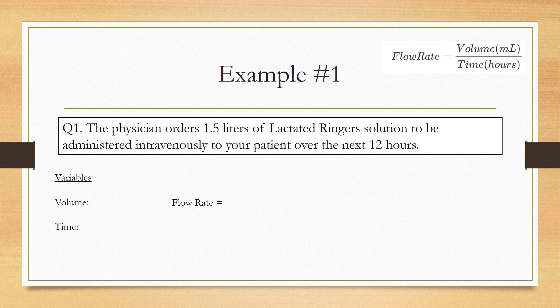Let's go through a quick example. The physician orders 1.5 liters of lactate ringer solution to be administered intravenously to your patient over the next 12 hours. First, let's look at this question. What are the variables? First one, volume. The volume is here, 1.5 liters.